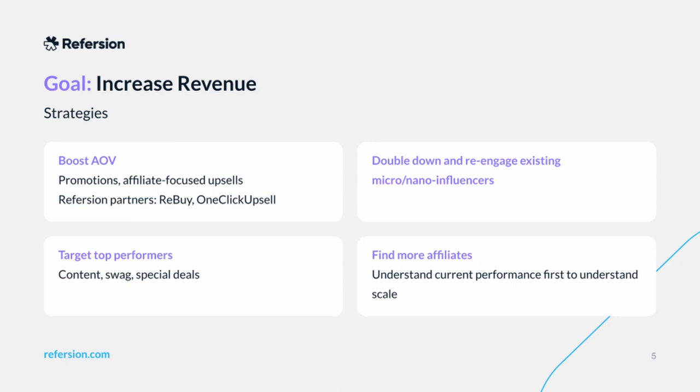So now you know you need 226 extra conversions a month — the next question is how are you going to get there? Most of our merchants find that AOV tends to be relatively static. That said, maybe there are some tactics you could address: promotions, affiliate-focused upsells. Some of our Refersion partners focus just on this idea — Rebuy, one-click upsell — and they can help drive those upsells that are affiliate-based to help drive general AOV, and more importantly, your affiliate-based AOV.